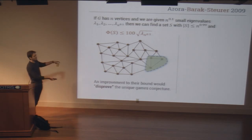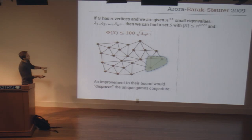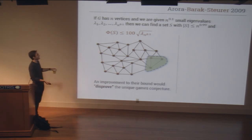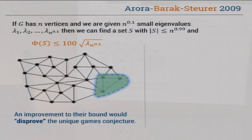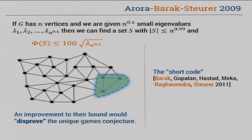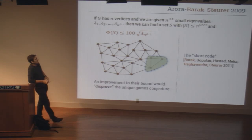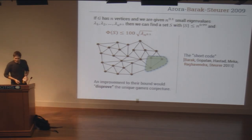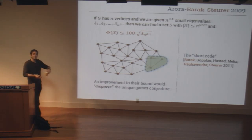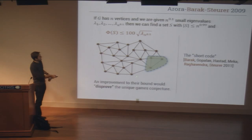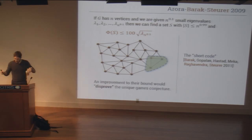If this spectral approach fails, we still have evidence it isn't nonsense. In seeking lower bounds — graphs with many small eigenvalues but no small bottlenecks — this group of authors constructed the 'short code,' a remarkable complexity-theoretic construction with many implications. Studying this spectral problem gives a way of thinking about the world with provable consequences, even for our understanding of computational intractability.